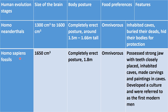After that, Homo sapiens is the latest stage of human evolution. Brain size is 1650 cm³. Body posture is completely erect and height is around 1.8 meters. They were also omnivorous — modern humans. They possessed a strong jaw with teeth closely placed. They inhabited caves initially, made carvings and cave art and paintings, developed a culture, and are referred to as the first modern humans. Finally, with time, these Homo sapiens formed the modern human, called Homo sapiens sapiens.